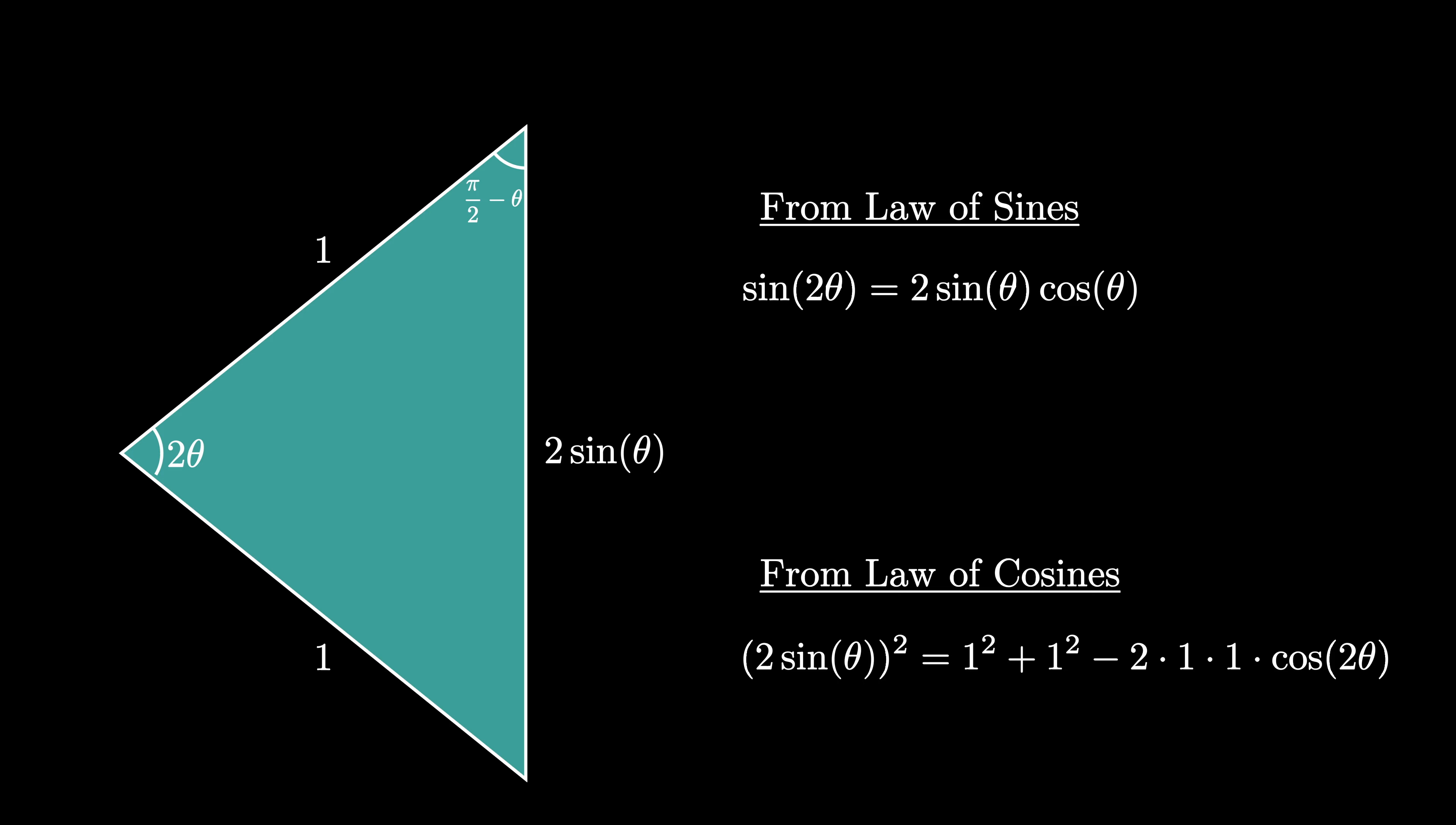Dividing this equality by 2 and isolating the cosine of 2 theta, we see that cosine of 2 theta equals 1 minus 2 times sine squared theta.